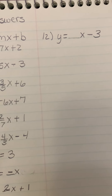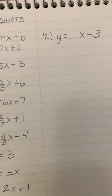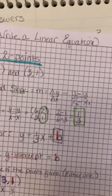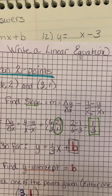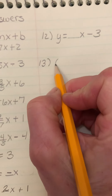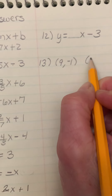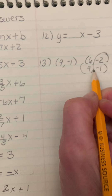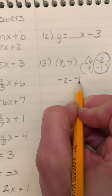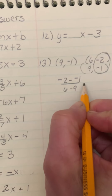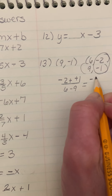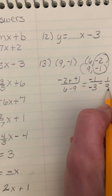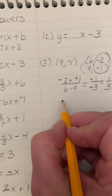Now we get to the more challenging ones, starting with question 13. I'm using my notes here — we're given two points. Step 1: find the slope. I have (9, -1) and (6, -2). Stack and subtract, circling the y-values: (-2) - (-1) over 6 - 9. You get -1 over -3. Two negatives make a positive, so the slope is 1/3.